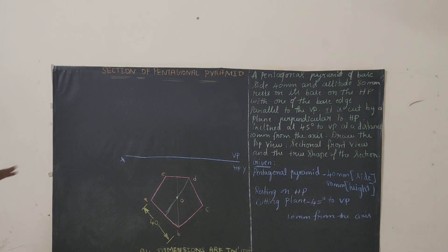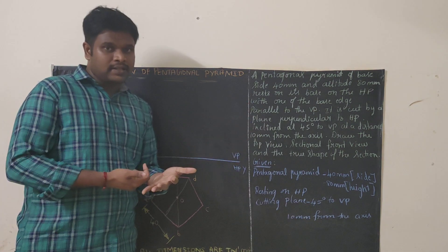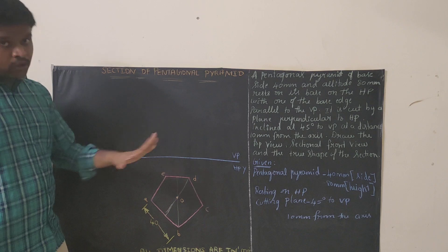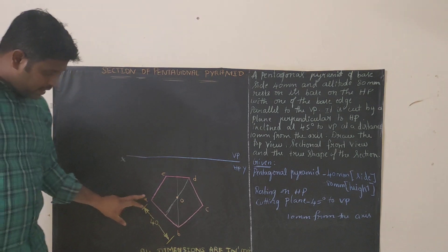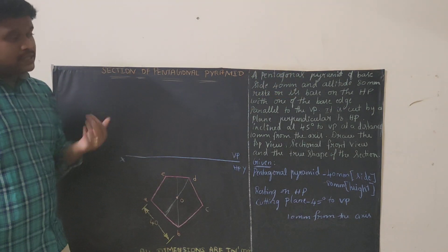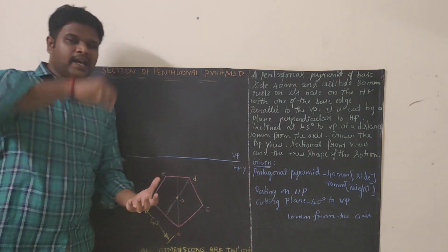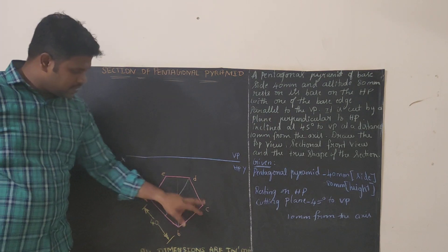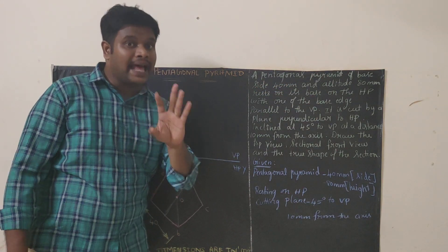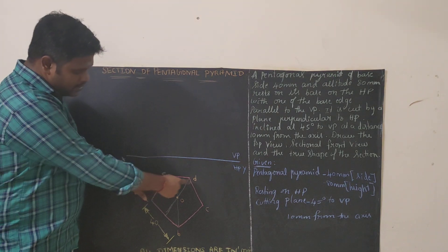The first step is to draw the reference line as XY and write HP/VP. The next step is to draw the pentagon — it is our base diagram. Draw the pentagon with all sides equal to 40 mm. You know how to draw the pentagon. Name the vertices ABCDE. Since it is a pentagonal pyramid, we will have only 5 base namings and one apex point O. For a pyramid, you have to give preference to slant edges — remember this point.